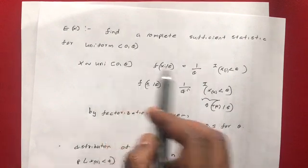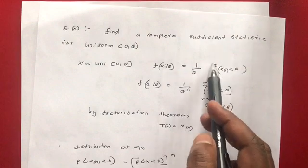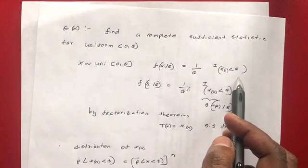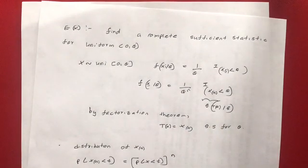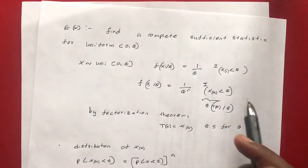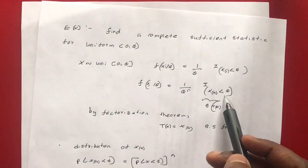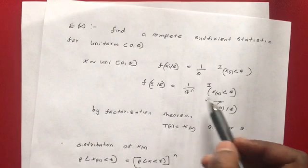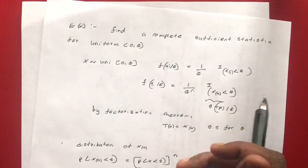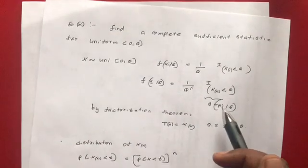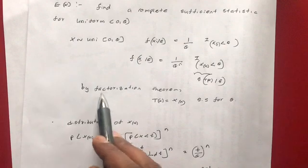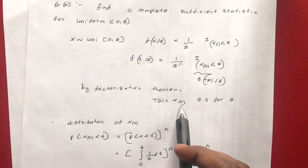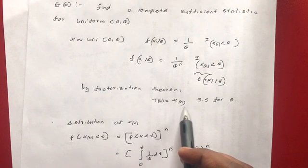Because in the joint function we have x1 less than theta, x2 less than theta, up to xn less than theta, this all reduces to: the maximum value x(n) is less than theta. This is in a form consistent with the factorization theorem — this is our g(T(X)) given theta. Therefore, by the factorization theorem, T(X) = X(n), the largest order statistic, is a sufficient statistic for theta.